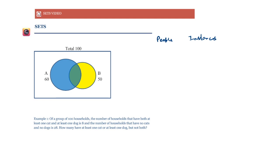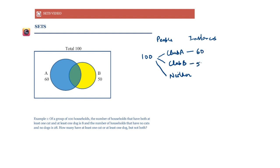The number of people is not equal to the number of instances, normally. What that means is: say we have 100 people, and say 60 of them are members of club A and 50 of them are members of club B out of these 100 people.